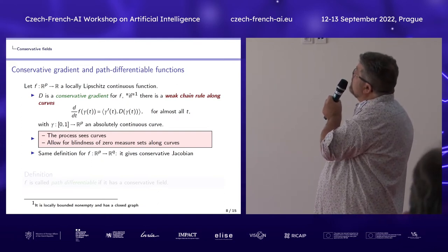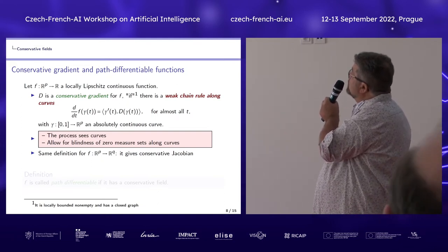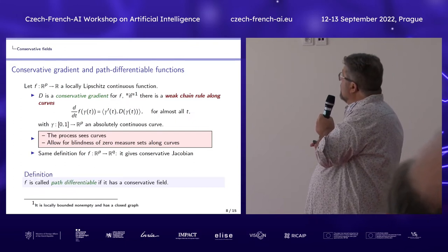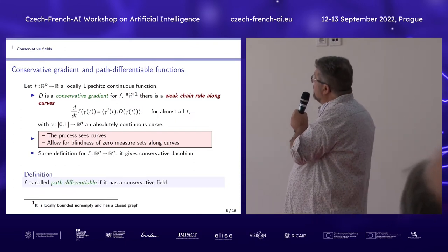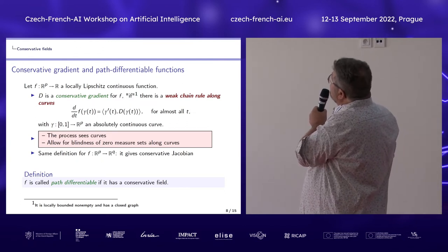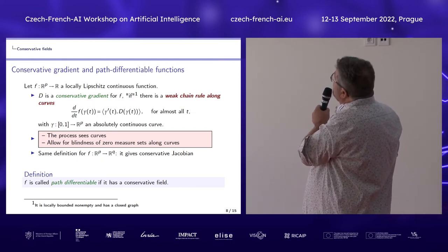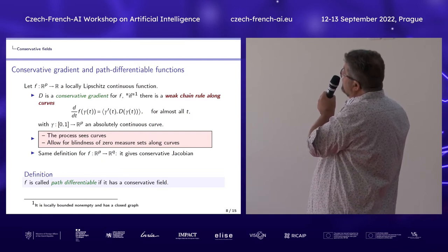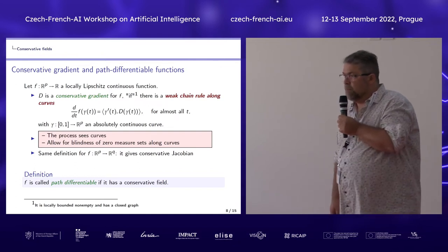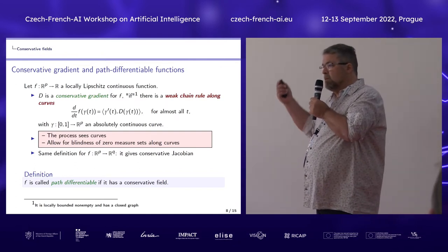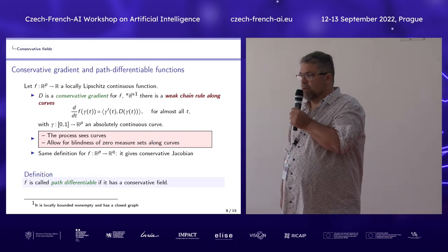The same holds for general functions with conservative Jacobians. If a function has a conservative field — if there is an object that satisfies that definition — then it is called path differentiable.